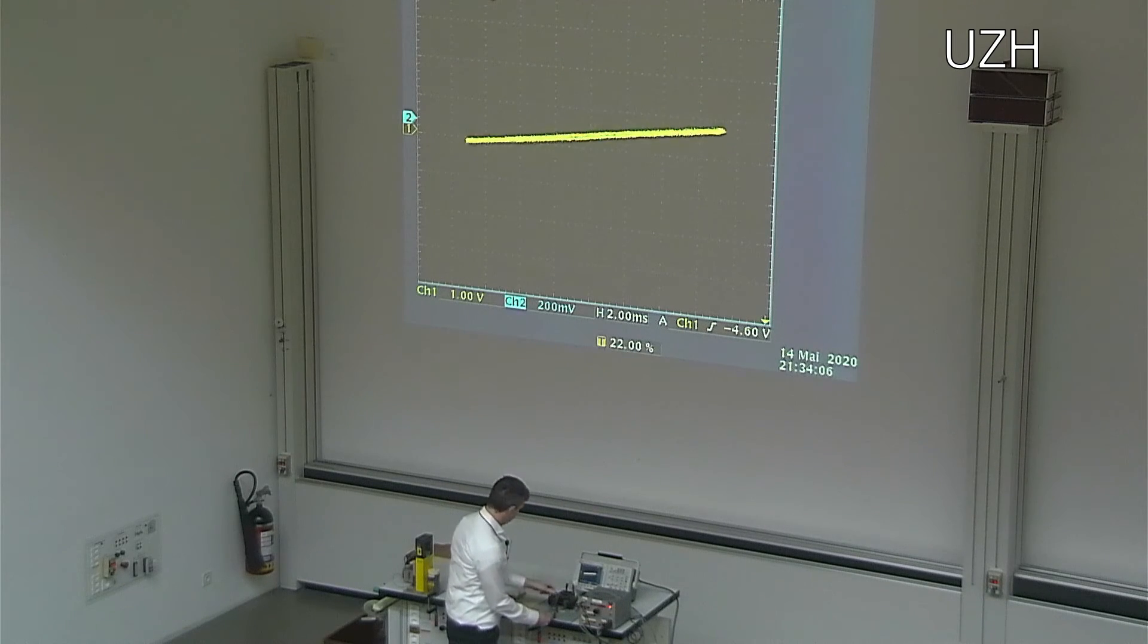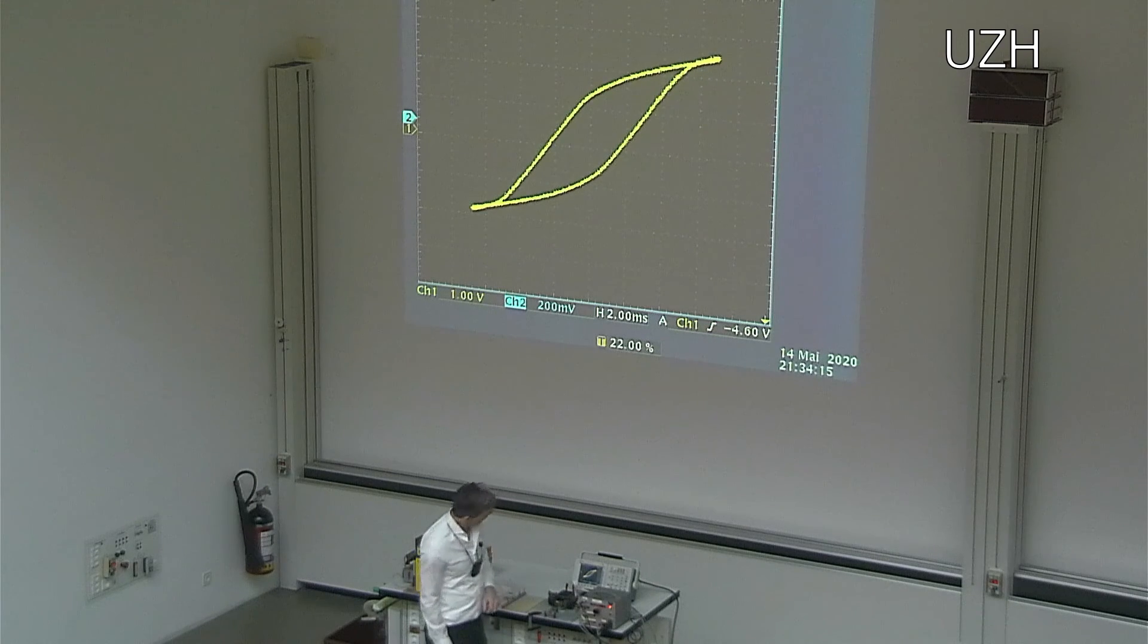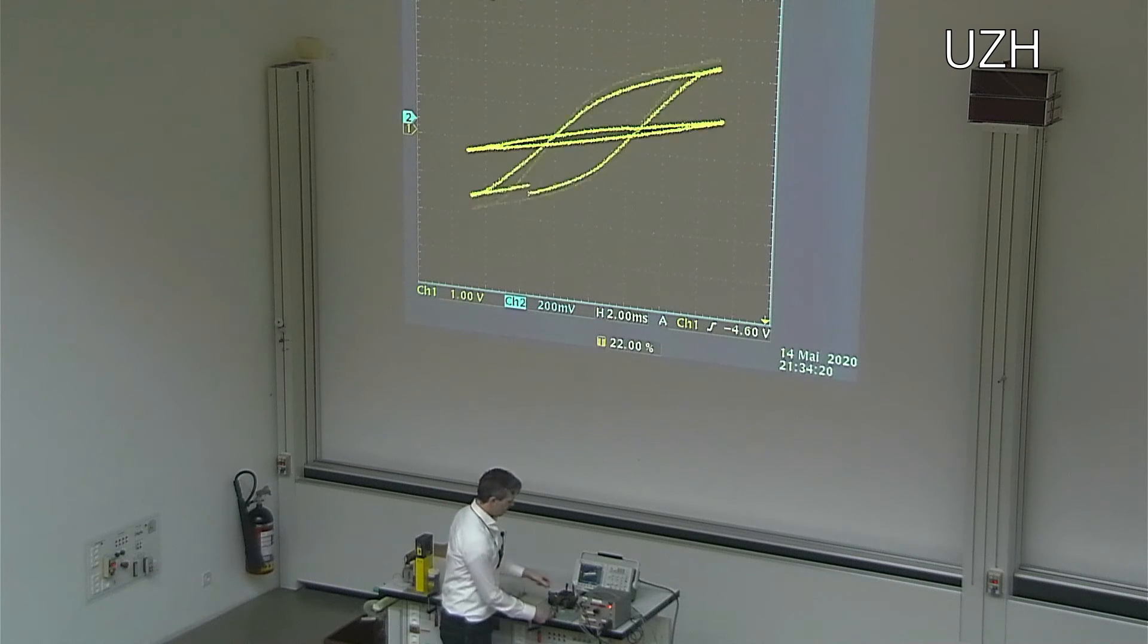Now let's look at some other materials. This is hardened steel. We see a slightly different shape, but we still see this hysteresis.